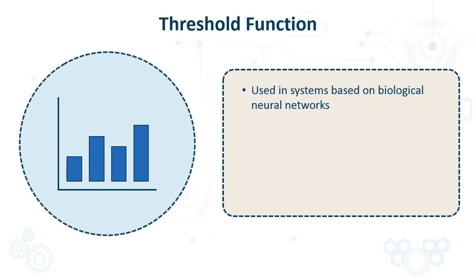Threshold functions are generally used in computational systems that are essentially based on biological neural networks. It is also used to quantify the output of neurons in output layer. These quantified values are used when we perform classification in neural network.